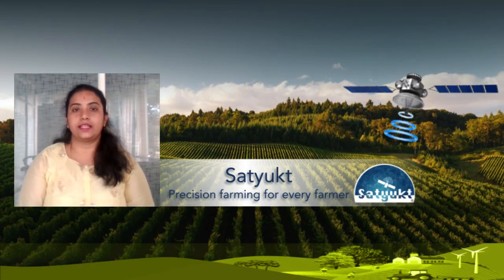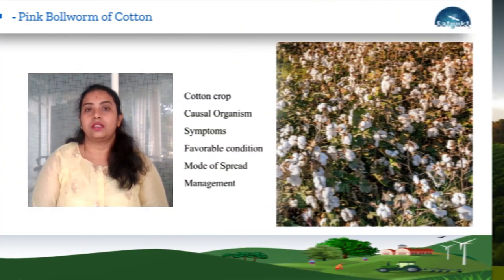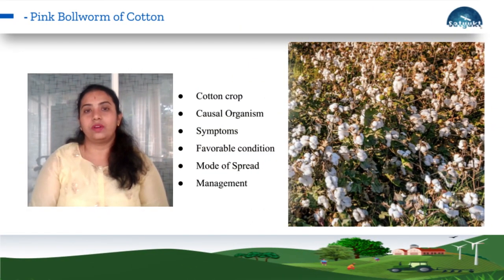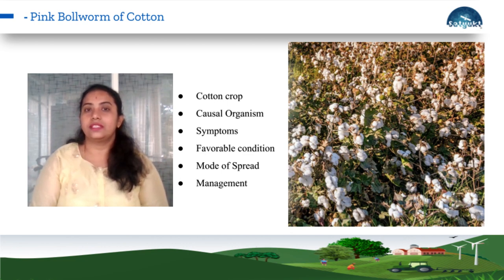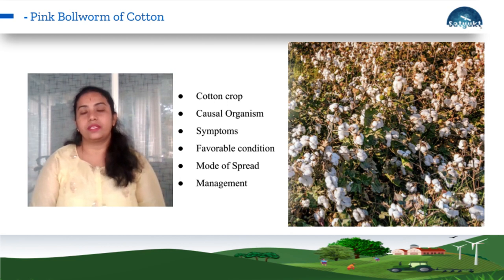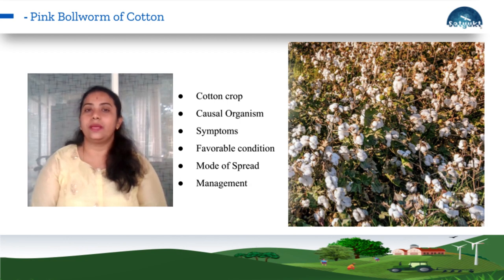Hi, this is Emma from Satitha Analytics. In this video I'll be briefing about one of the major pests of cotton: pink bollworm. As we know, India is the larger producer of cotton, which is grown commercially in our country and accounts for nearly 25% of global production. This cotton crop is prone to many pests and diseases, and one such pest is pink bollworm.